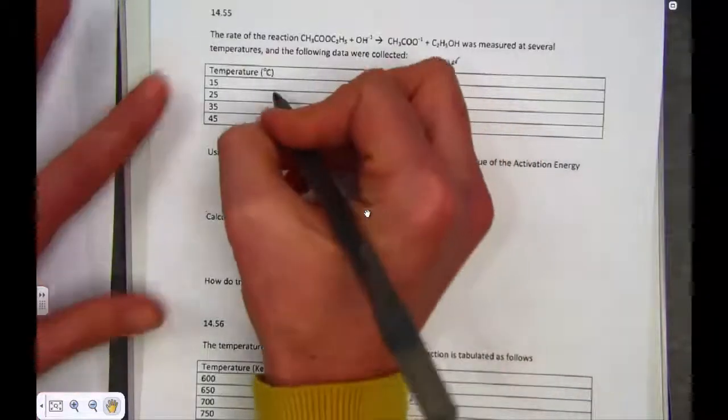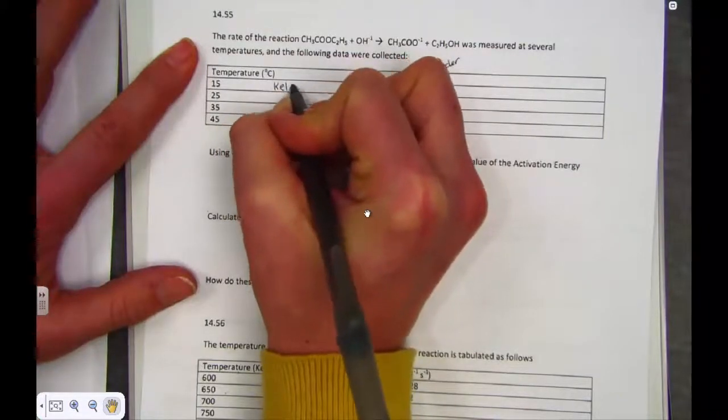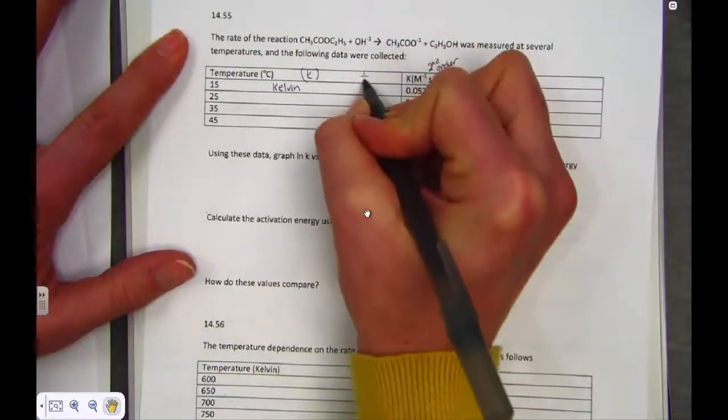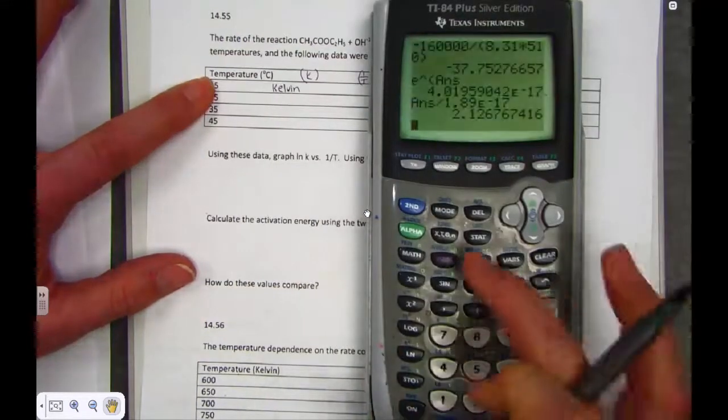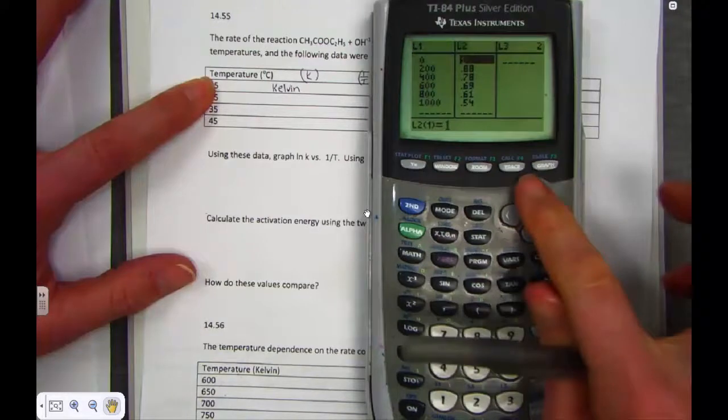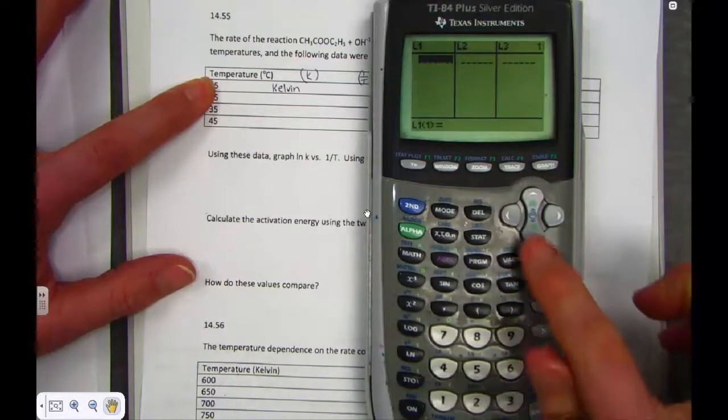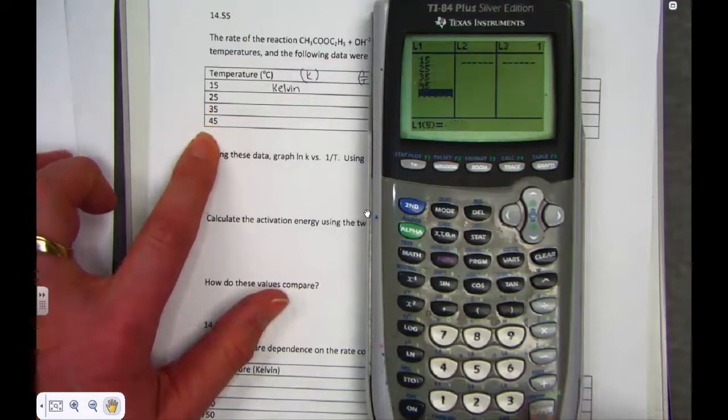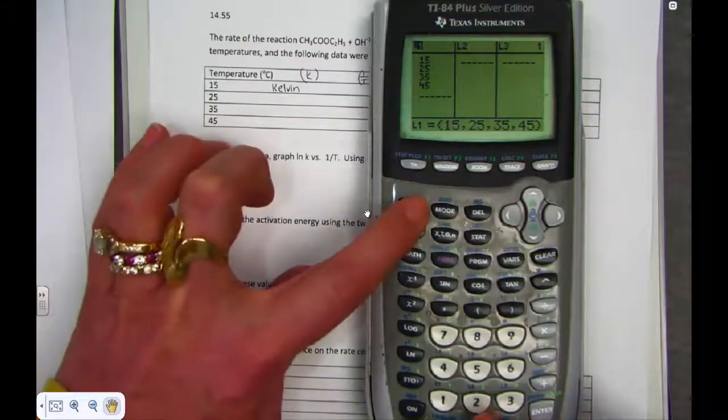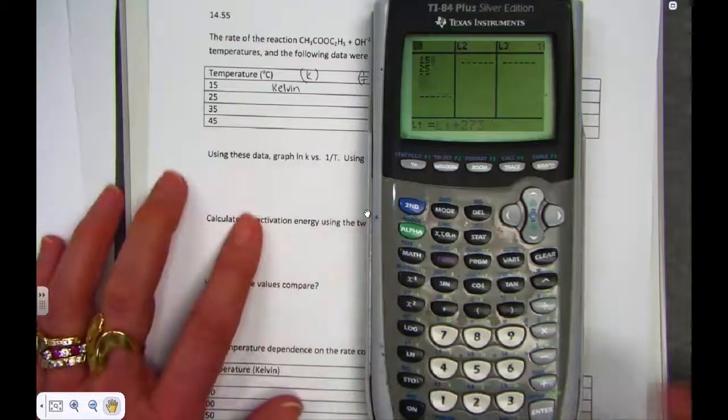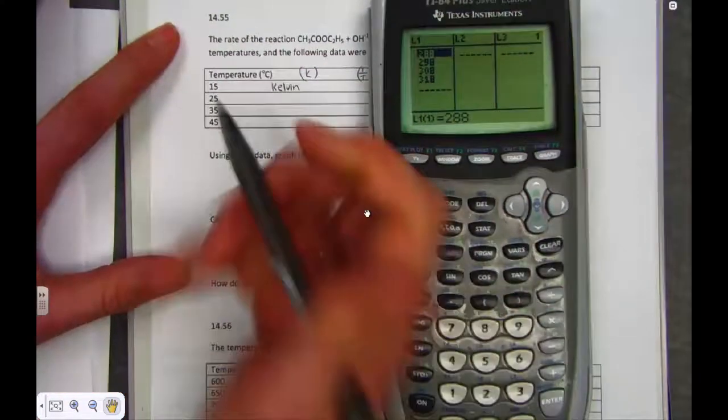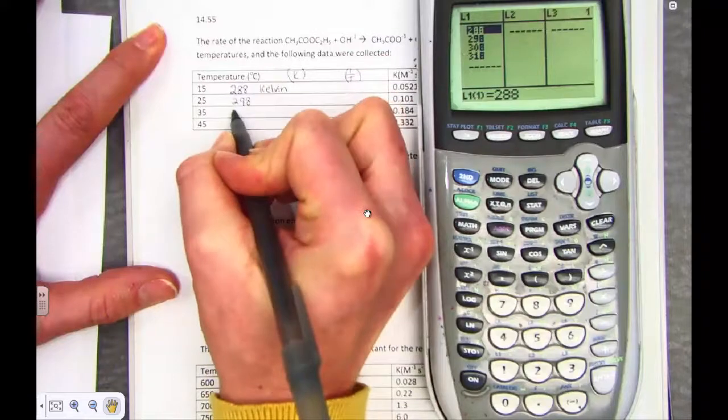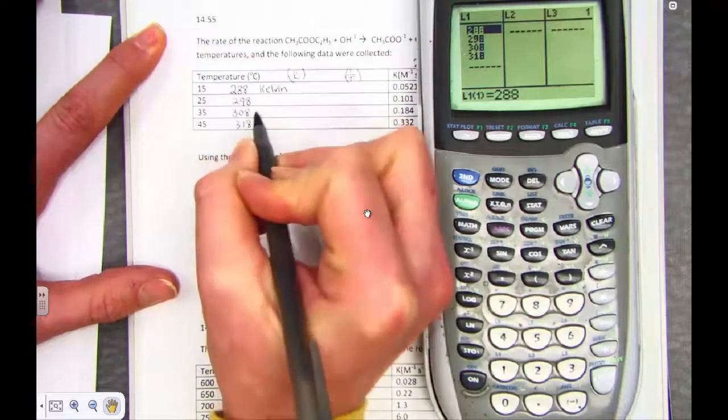So we need to generate some lists. First of all, I know I need the Kelvin temperatures, and then ultimately I need the reciprocal of those Kelvin temperatures. Into my list one, clear anything that's there. I'm going to type in as it is: 15, 25, 35, 45. But I'll put my cursor back up on list one, and I'll say list one plus 273. Now I have flipped them into Kelvins. So 15 is really 288 Kelvin, 298 Kelvin, 308 Kelvin, and 318 Kelvin units.